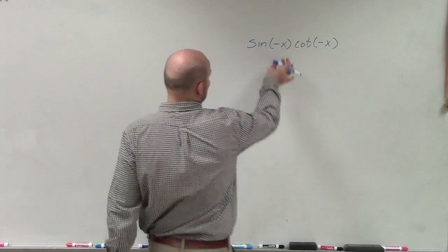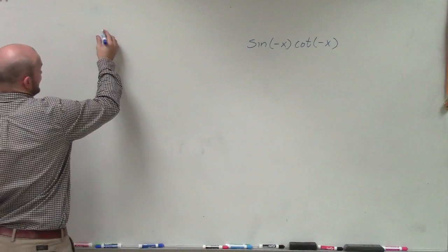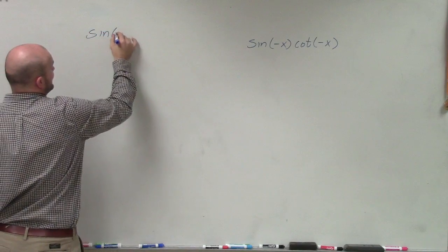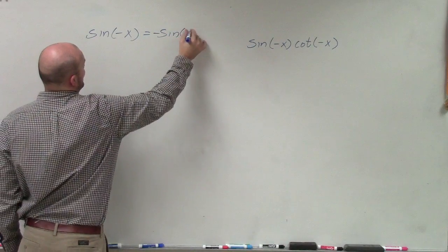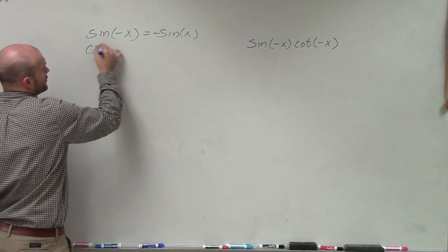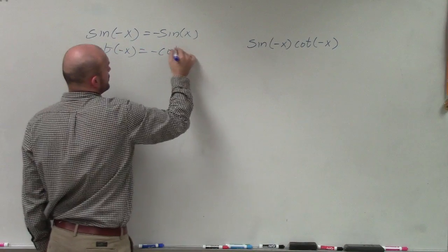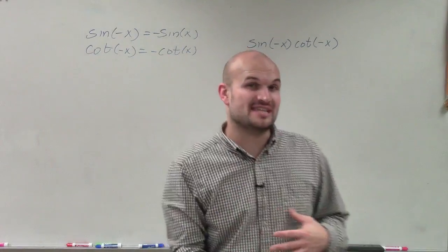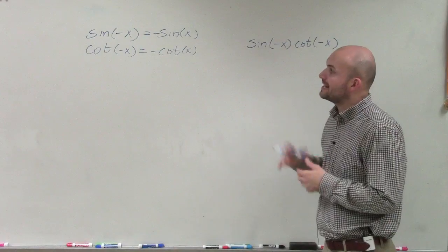So immediately, once I see the negative input, I automatically think my even-odd identities. And even-odd identities, if you remember, they have the sine of negative x that equals negative sine of positive x. And that's actually true for cotangent of negative x. That's equal to the negative cotangent of x. And remember, that is because the sine and the cotangent are both odd functions.